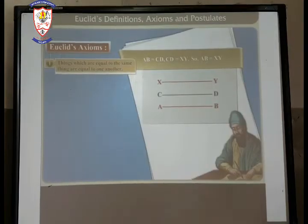Euclid's axioms, the first one: Things which are equal to the same thing are equal to one another. Here, we have taken three lines. AB is equal to CD and CD is equal to XY. If AB is equal to CD and CD is equal to XY, then AB is equal to XY.